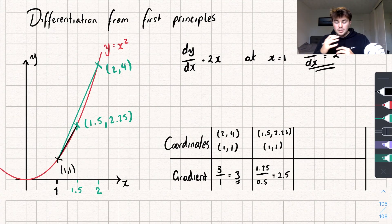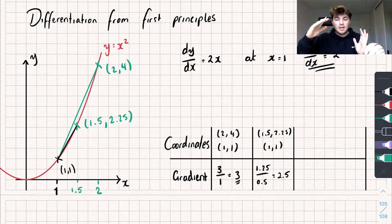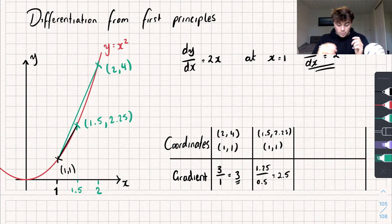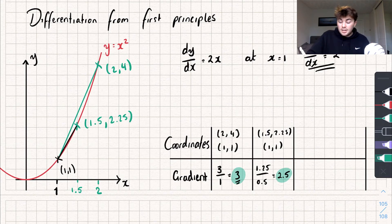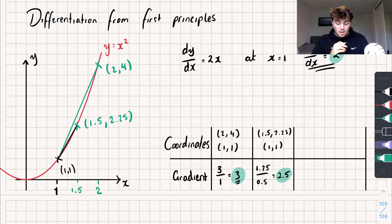So you can see, as I bring that second point closer and closer to the point I'm interested in, my gradient was 3, then 2.5 — my gradient is actually getting closer to the real gradient, so I'm getting a good estimate.